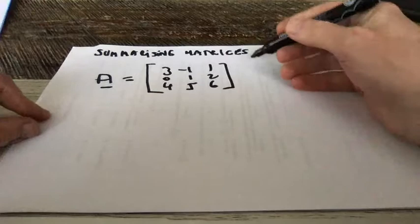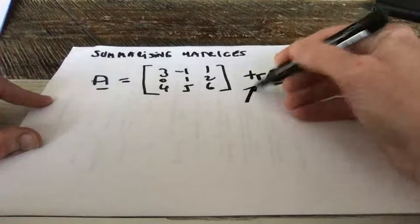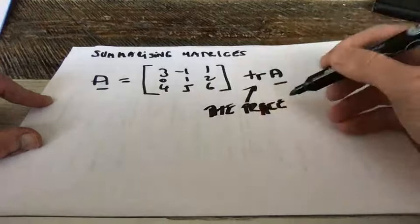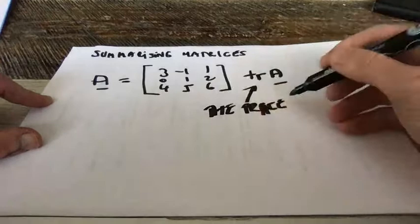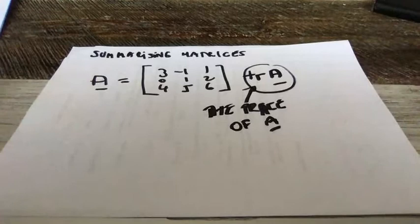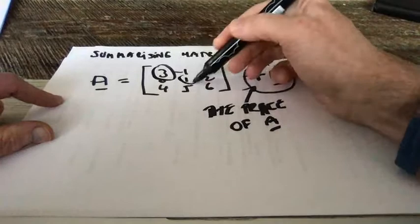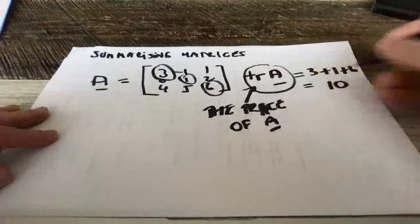One way to do this is what's called taking the trace. So the trace of the matrix A — the shorthand is TR — is read as the trace of A. It's written as the letter T, the letter R, and the matrix A. What you do is you look at the elements in the main diagonal, which is 3, 1, and 6 in this case, and you simply add them up. So the trace of A is 3 plus 1 plus 6, which is 10.